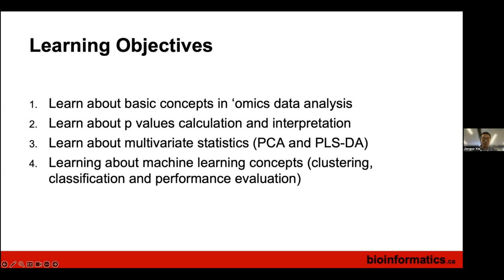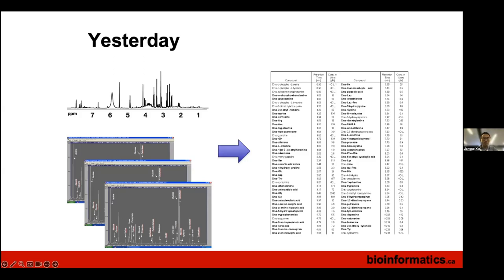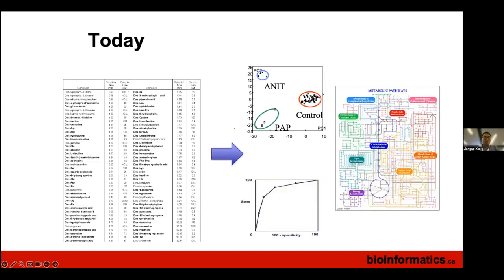Yesterday David covered how data was generated — from NMR, GC-MS, LC-MS. We don't do hands-on with the machines, but after raw data processing using tools like XCMS, GC-AutoFit, or LC-AutoFit, you get a concentration table. Now we have the data and today's topic is: how do we get from the data to biology, to patterns, to biomarkers? For most of you doing research, this is the most time-consuming part.